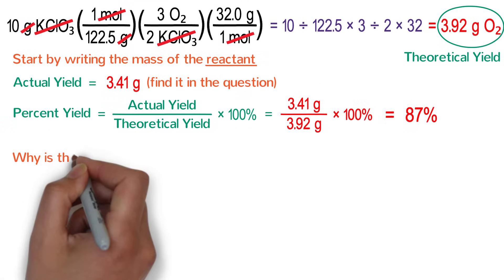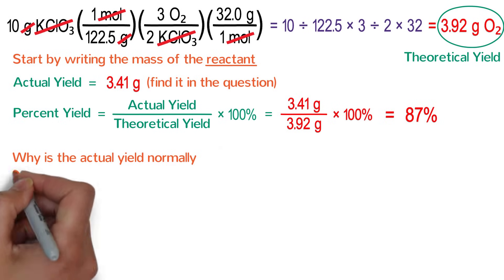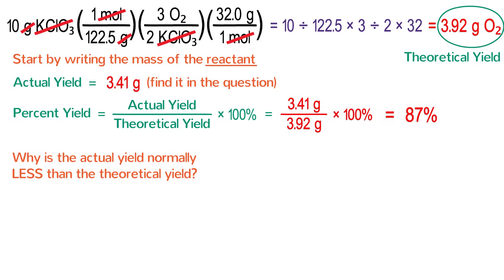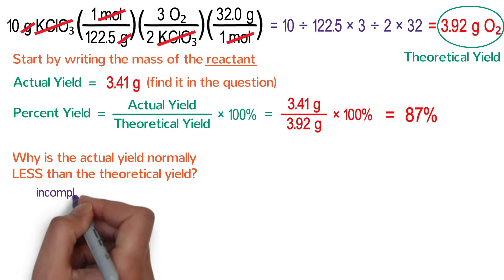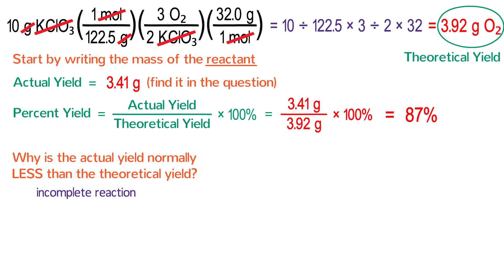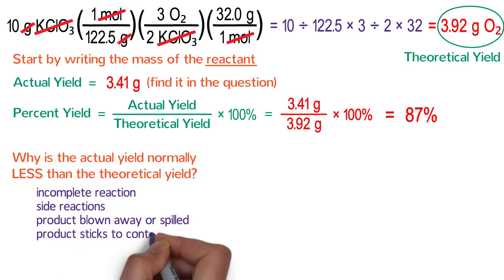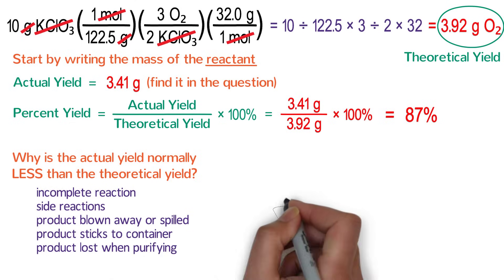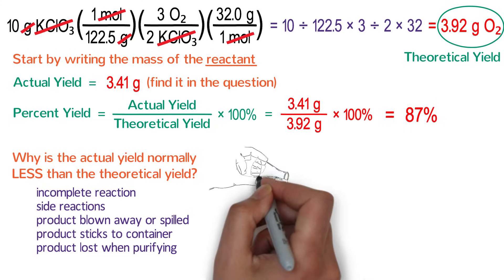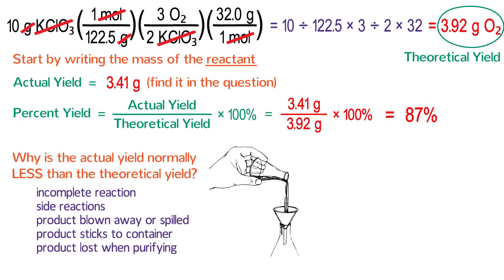Now you might be wondering why is the actual yield normally less than the theoretical yield? What's going on? A number of factors can contribute to this loss of product. The reaction might be incomplete, that is the reaction can't or hasn't fully converted to product. There may be side reactions that turn the reactants or products into something different. Some of the product may get blown away or spilled. Sometimes some of the product sticks to the container and you can't get it all out. It is also possible to lose some of the product when trying to purify it. These are all normal occurrences of things that can reduce your actual and percent yields.